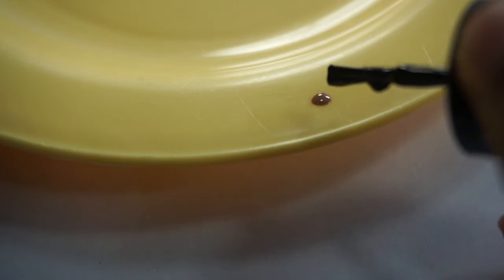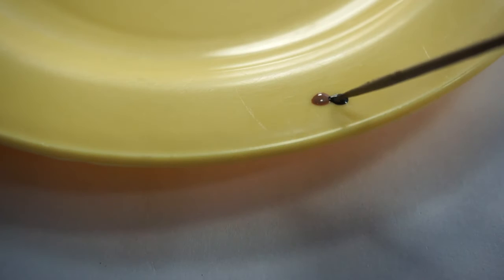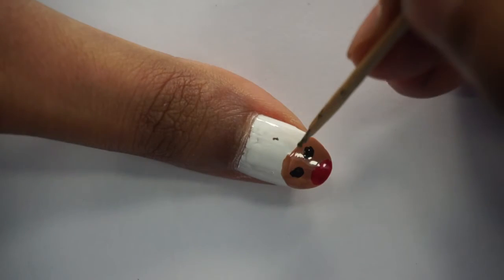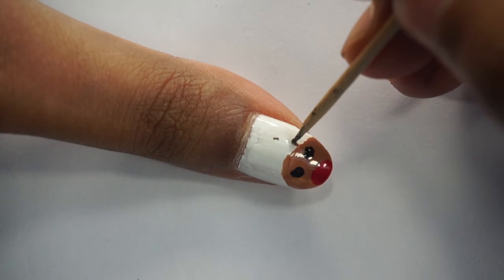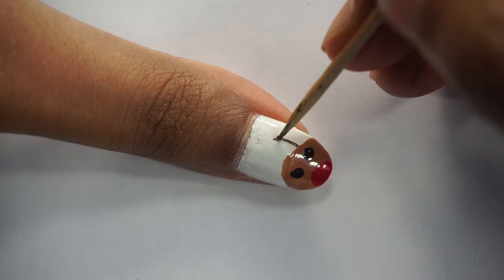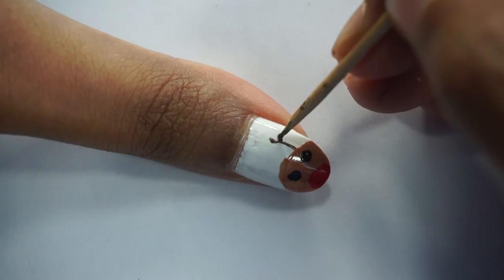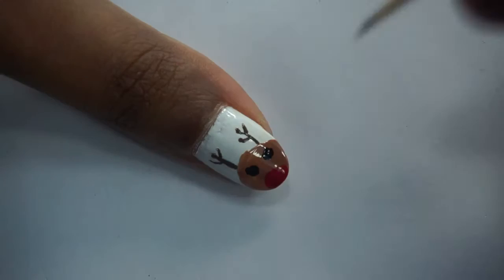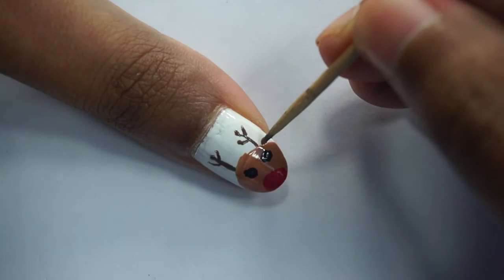I mix a little bit of black nail polish along with the brown to create a darker shade of brown. With the help of the pointy end of the toothpick, I create these using a stippling motion. Now let's not forget the ears.